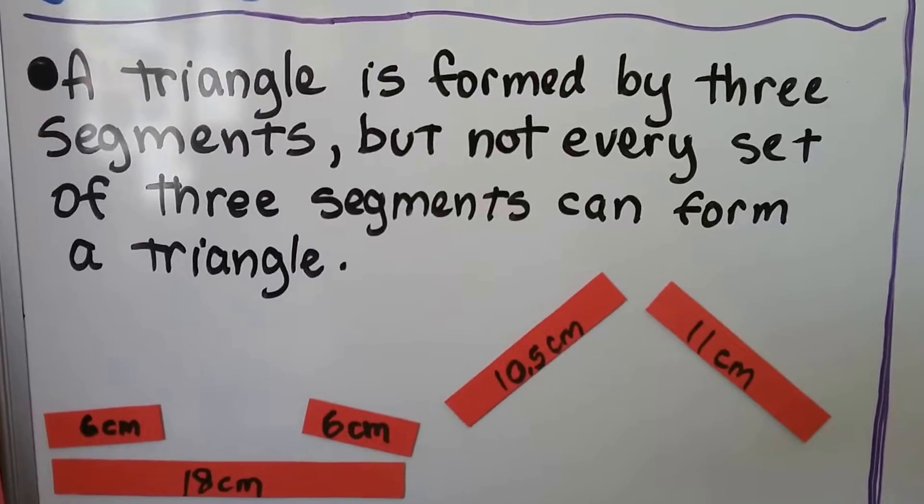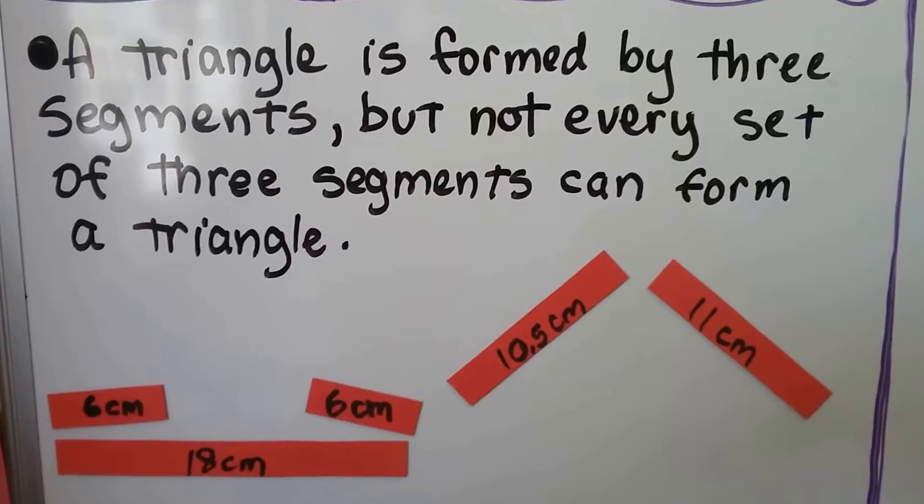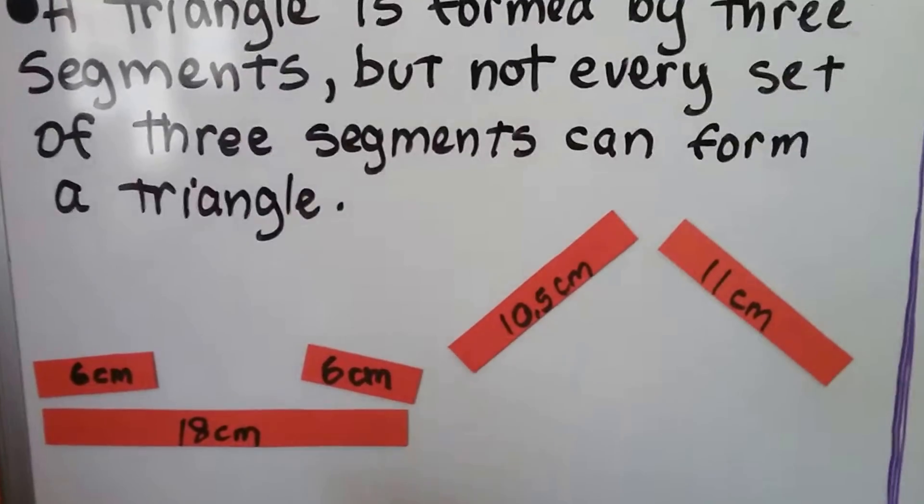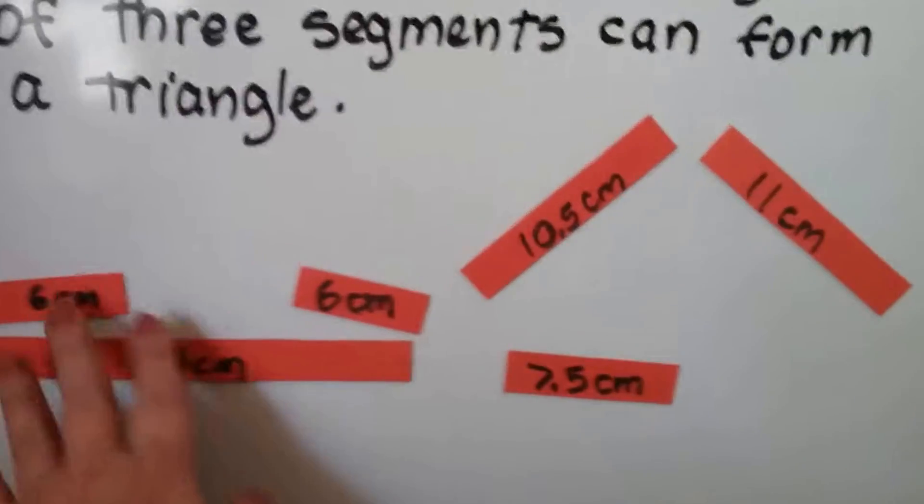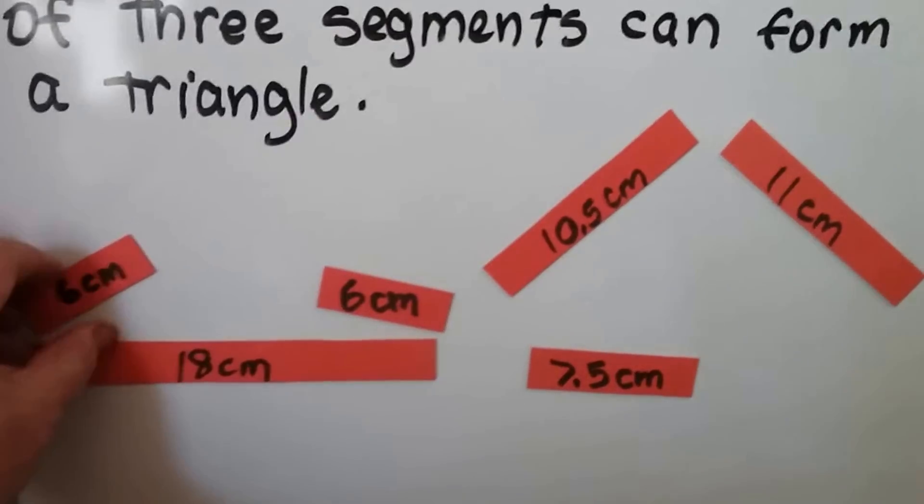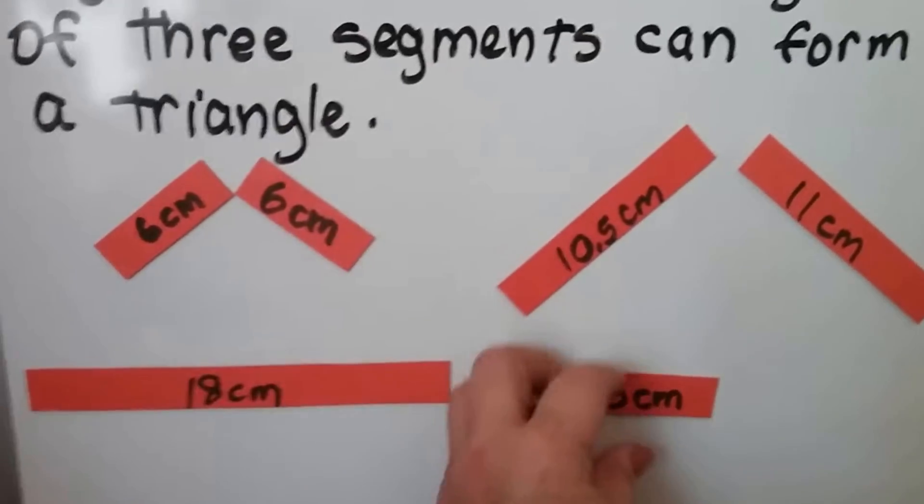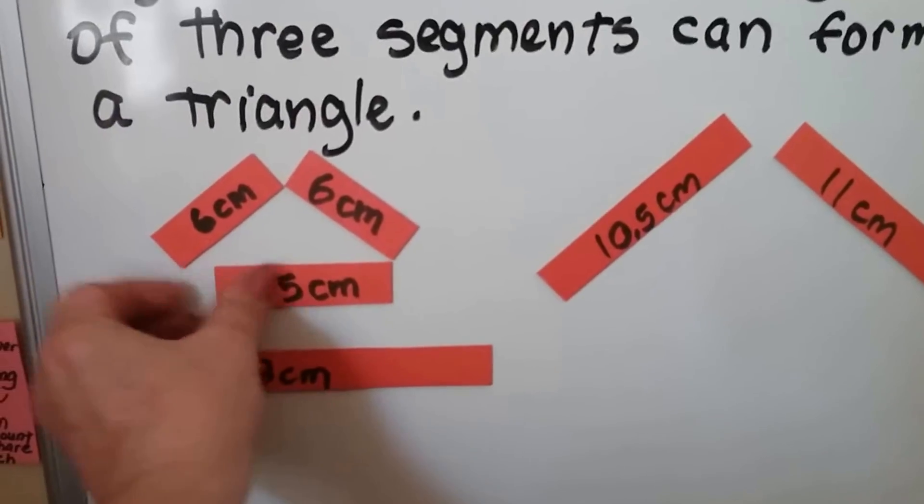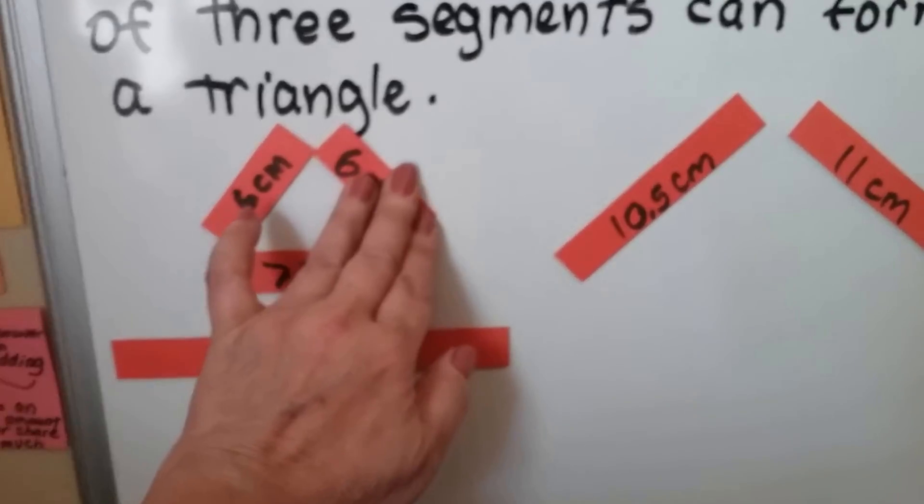We talked about this at the end of the last video. A triangle is formed by three segments, but not every set of three segments can form a triangle. Here I've got all these different segments, and I could take this six-centimeter segment, and this six-centimeter segment, and the 7.5, and I can move them around and make a triangle where they meet.